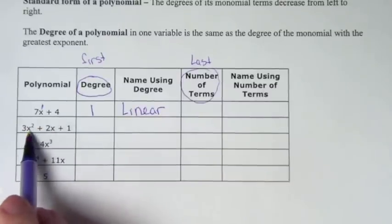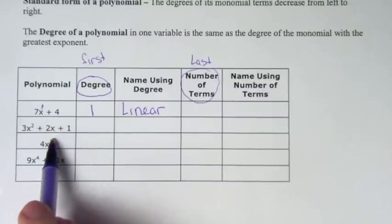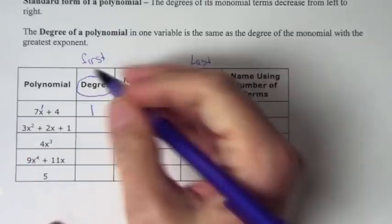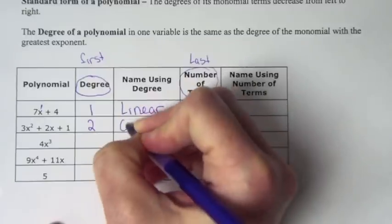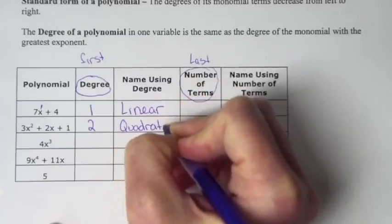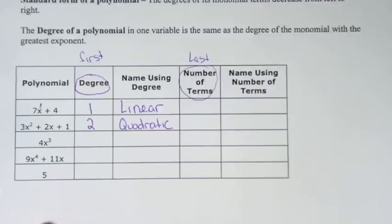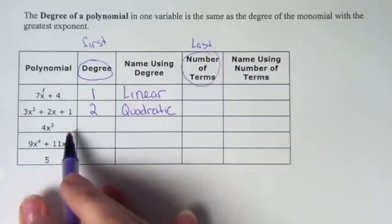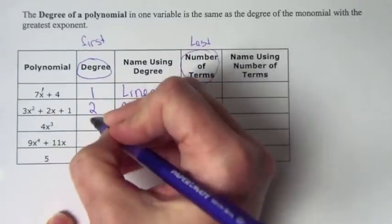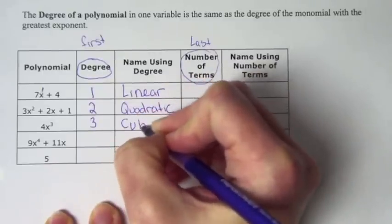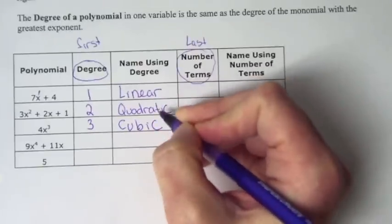On the second polynomial, we have 3x squared plus 2x plus 1. Which one has the biggest degree? 3x squared, and it's a degree of 2. So this polynomial has a degree of 2 — we call it quadratic. That's its first name. The degree of a polynomial is its biggest monomial. The next one is 4x cubed. What is its degree? 3. We call that cubic. Those are the only three special names you have to learn for first names.